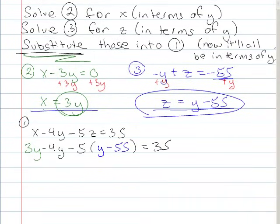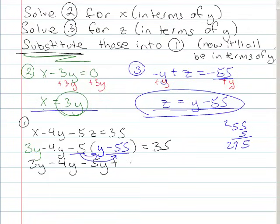So we'll scroll down here a little bit. So what I've got is 3y minus 4y minus 5y plus, now I'm going to distribute this, remember. So I have a minus 5 times a minus 55. So I can go over here, make sure I've got it. So plus 275 is equal to 35.